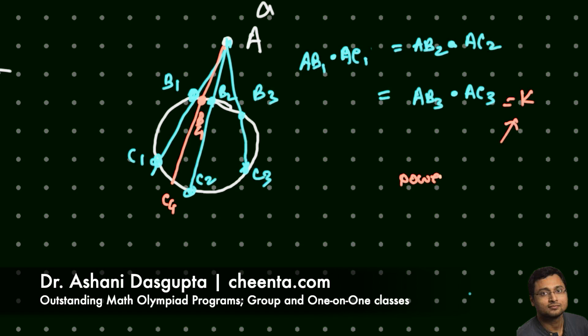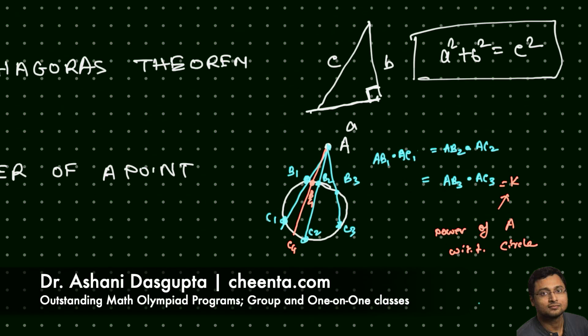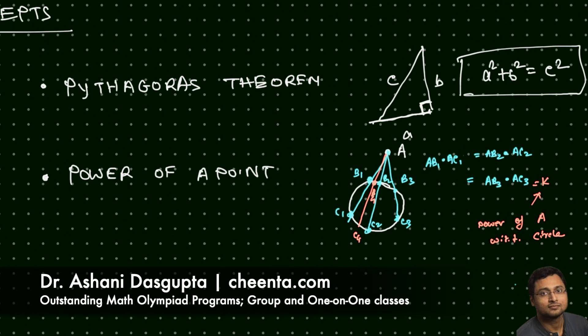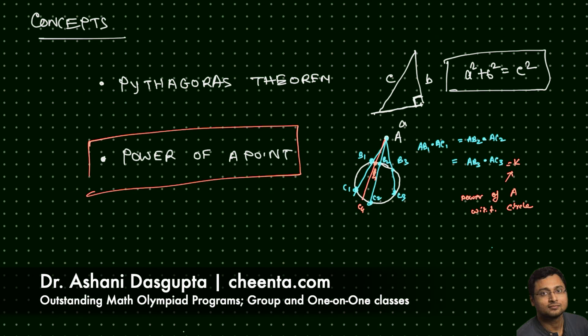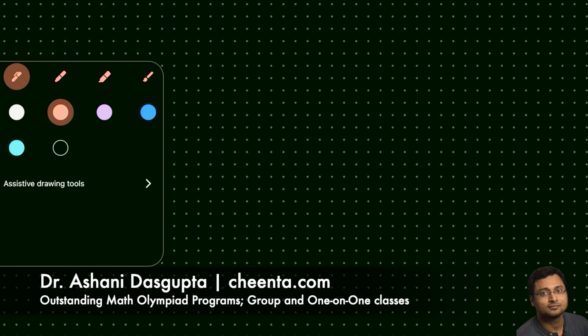Whatever this constant product value is — say 39 or 52 — it is the same for any secant you draw through A. This constant is known as the power of A with respect to the circle. I've put an explanation of why this works in the description, so check it out. It's a very powerful concept in geometry.